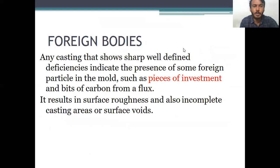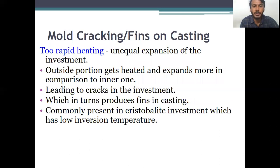The next type is foreign bodies. Any casting that shows sharp, well-defined deficiency indicates the presence of some foreign particle in the mould, such as pieces of investment and bits of carbon from flux. This results in surface roughness, incomplete casting areas, or surface pits. Other surface irregularities include mould cracking or fins on the casting.